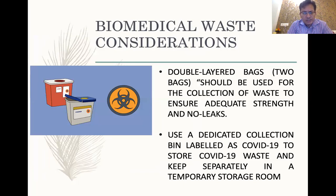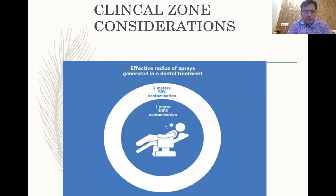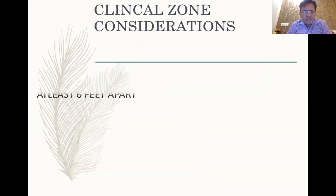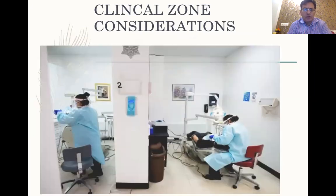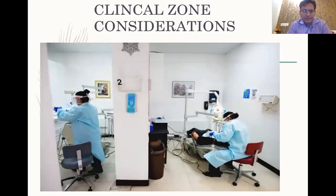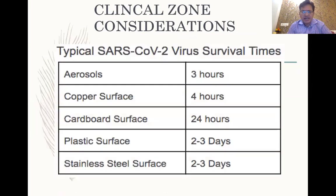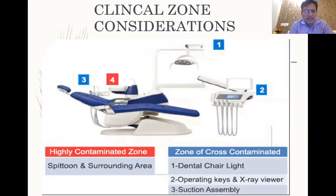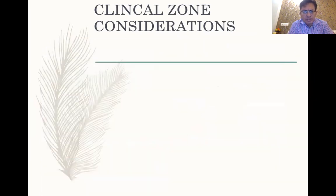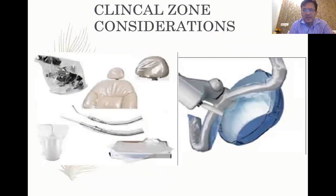One meter near the dental chair is a zone of 100% contamination, 50% at about 1.5 meters, and decreasing further out. Barriers between two operatories should be placed at least six feet apart. There has been much information about how long the coronavirus survives on various surfaces, but to be safe, everything disposable should be used — cling wraps must be disposed of after every patient.